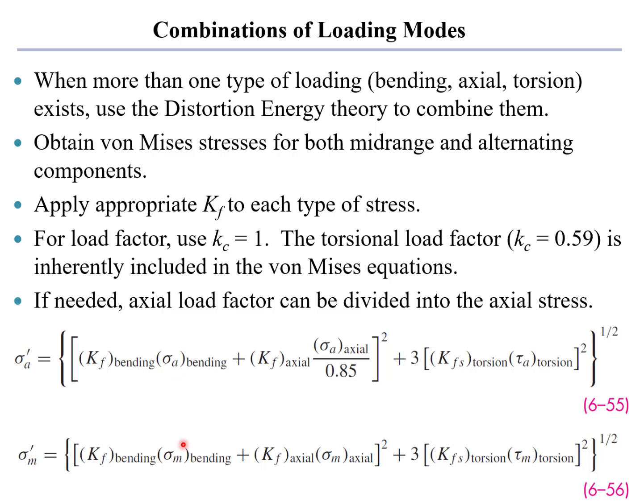Now imagine we also had an axial load being applied to the sample, and the axial load was also cyclic and it was in phase with the cyclic bending. Well, we have to take that axial load and we have to convert that axial load into an equivalent bending stress before we can add those things together, even if they're acting in the same direction and on the same plane. So we take the axial load and we divide it by 0.85, which you'll remember is the load correction factor for axial loading. So in effect, we take the axial load and we magnify it, and we are only magnifying the stress amplitude. We multiply that by the appropriate fatigue stress concentration factor for axial loading.